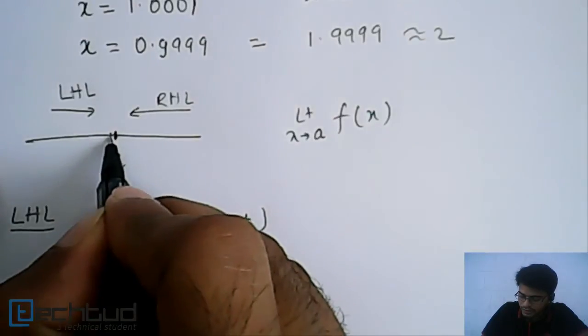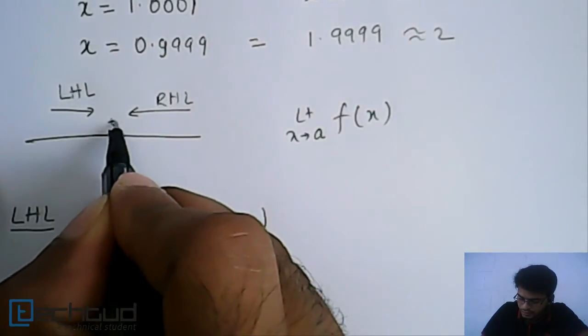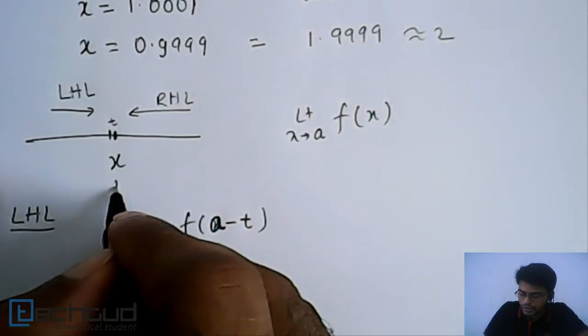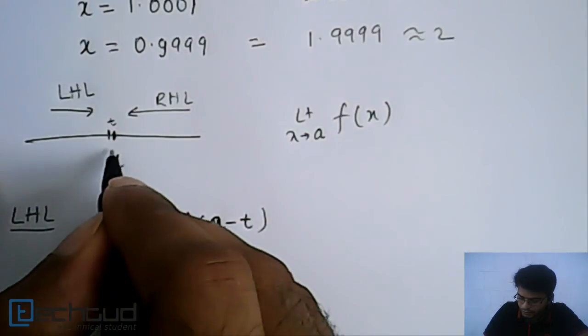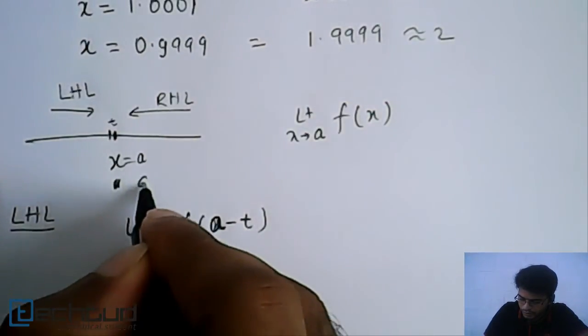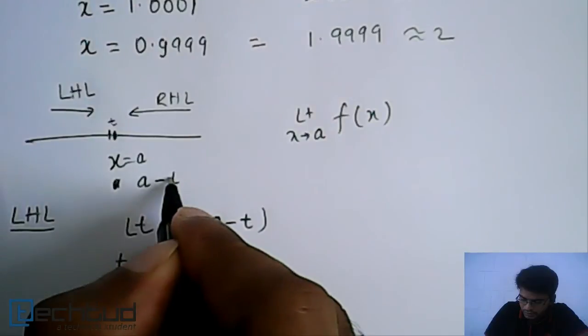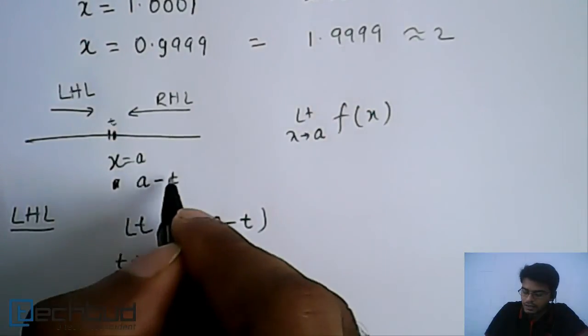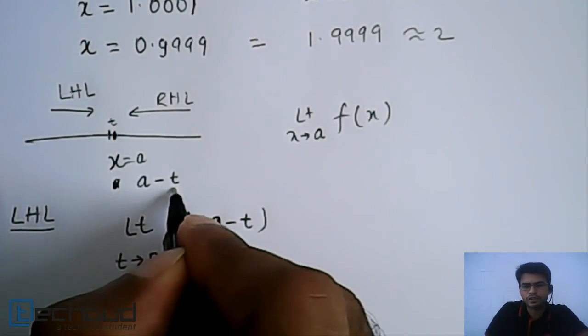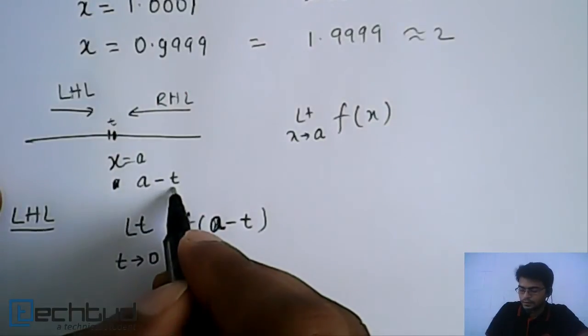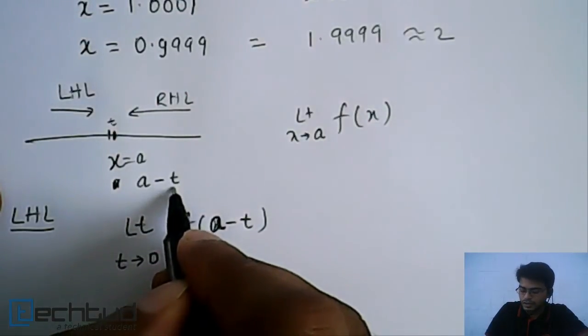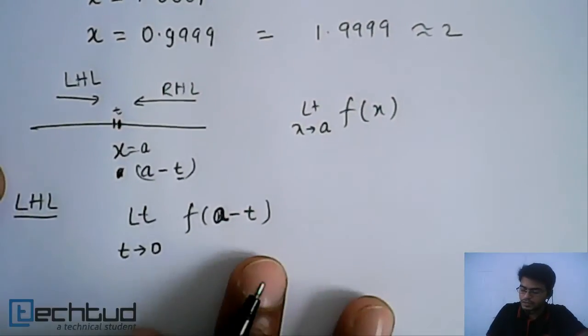So what basically we are doing? We are choosing a point which is just before this x. So let's say this is t, this difference is t. So the value is a, so we are doing a minus t, where t is very small, it tends to 0. So this is basically what we are doing. We are approaching this point from left.